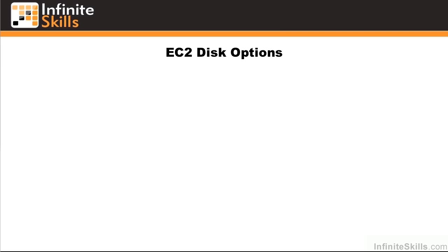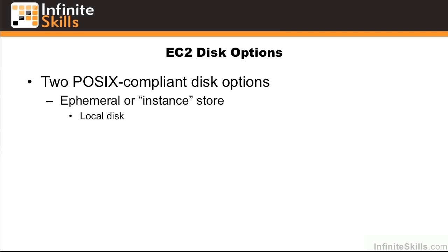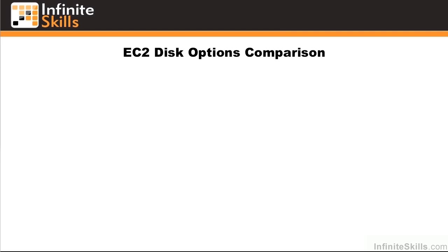In this lesson we're going to explore the two disk options available to EC2. The two options are ephemeral, or instance store — those terms are used interchangeably in AWS — which is local disk. This is disk that's given to you for free when you provision an EC2 instance. There's also EBS, or Elastic Block Store, which is network-attached disk that you can provision and attach to a single EC2 instance.